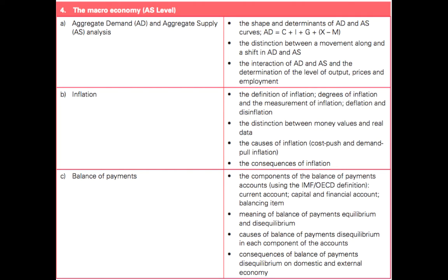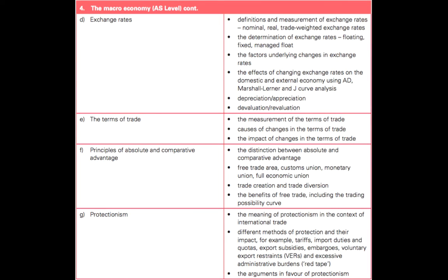Unit 4 is taking a look at the macroeconomy and this is the first set of concepts we need to study but not all of them. We're going to look at aggregate demand, aggregate supply, inflation, balance of payments, exchange rates, terms of trade, absolute and comparative advantage, and protectionism. I'm going to try to guide you to the things you should be able to do or the ideas you should be comfortable with when you're getting ready for this exam by section. Let me get started with aggregate demand.